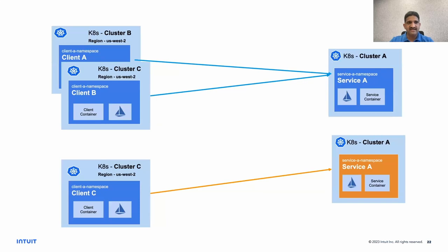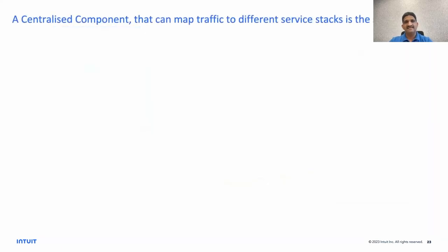We have two problems here. First, the owners of these clients need to know the patterns that virtual services support to route traffic — it could be based on weights, paths, or a combination, and their evaluation semantics. Second, changes have to be made every time a service rolls out a new version or rolls back an existing version. How do we handle this at scale with Intuit running hundreds of services consumed by hundreds of clients?